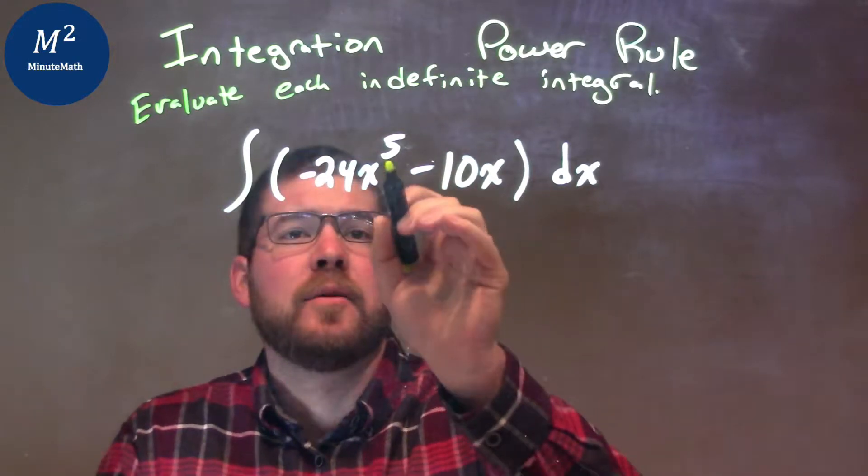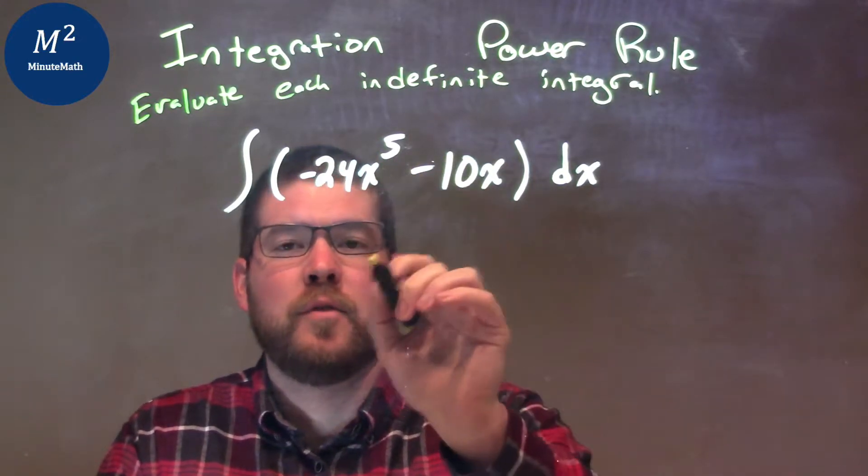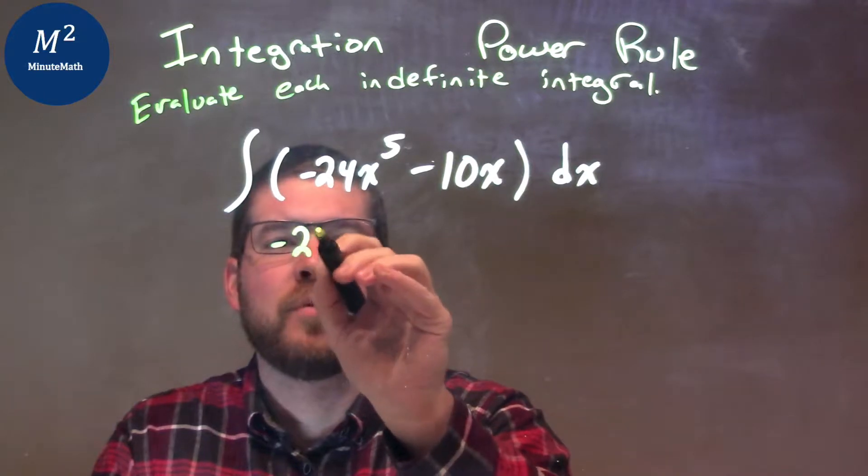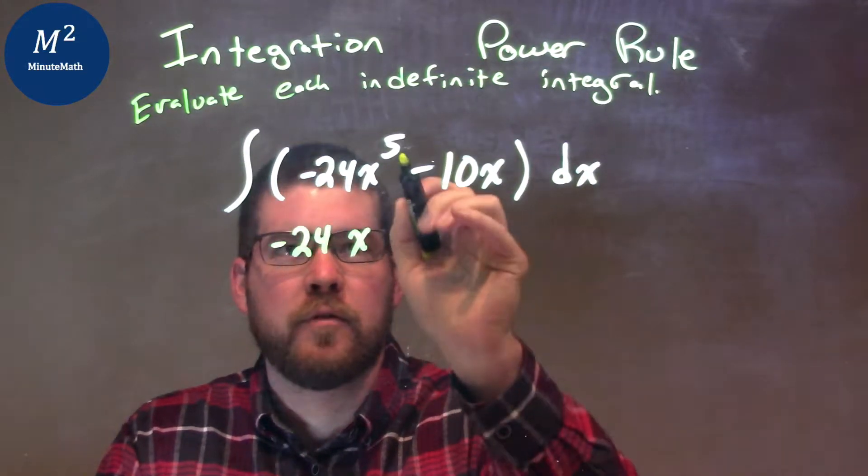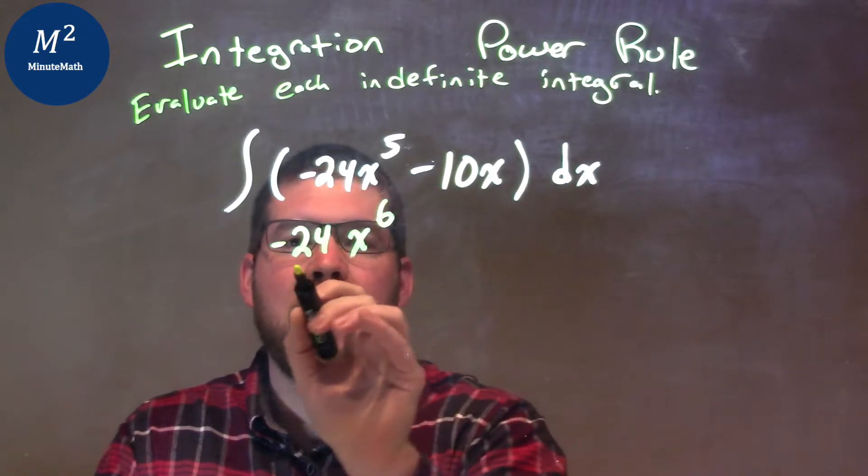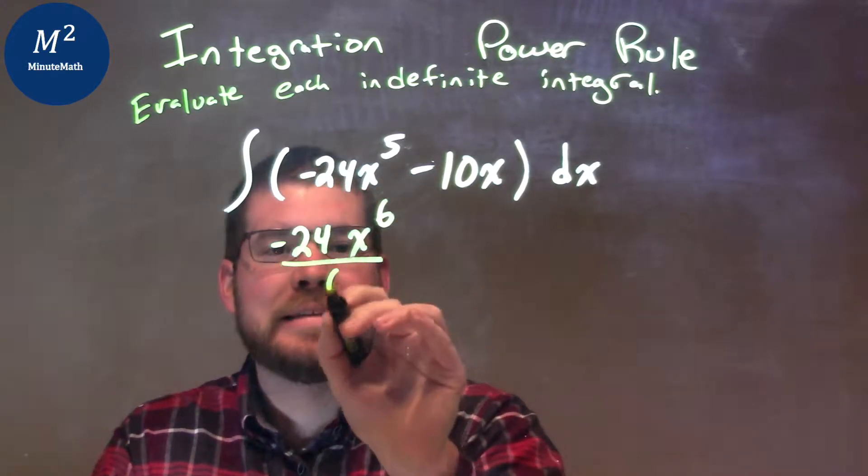With that, we look at the negative 24x to the fifth. I'm going to keep the constant, negative 24, and then the x, but I'm going to raise that exponent by 1. 5 plus 1 is 6. I then have to divide this part by 6 as well.